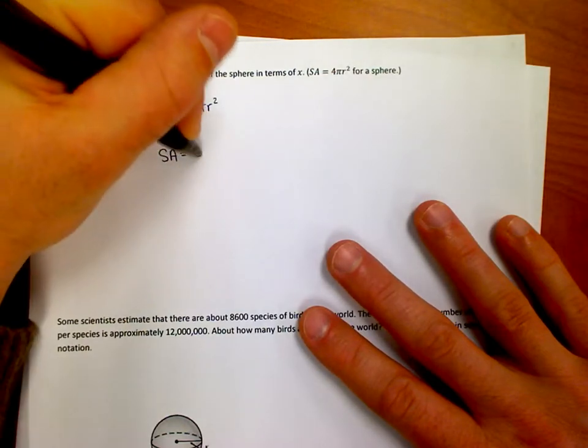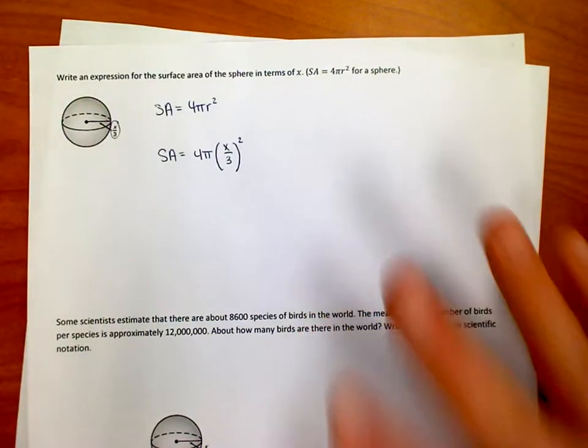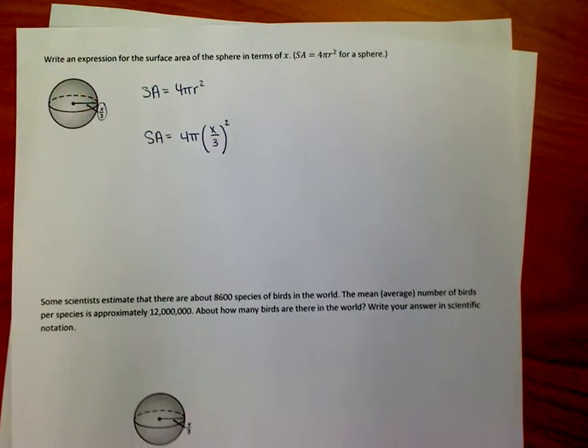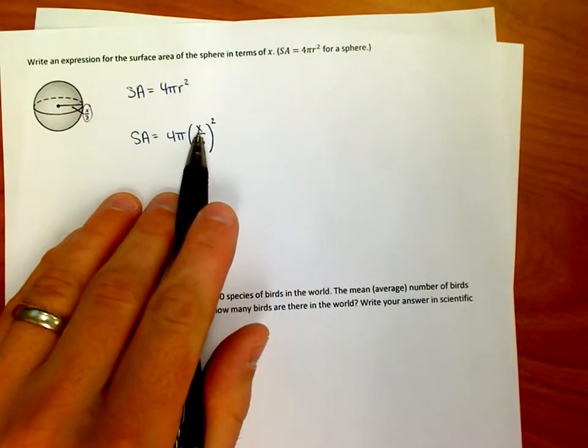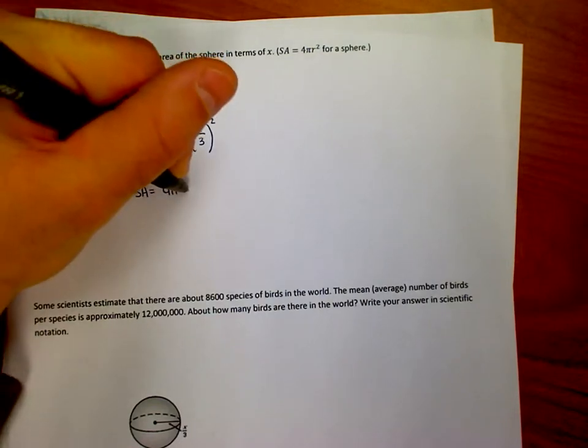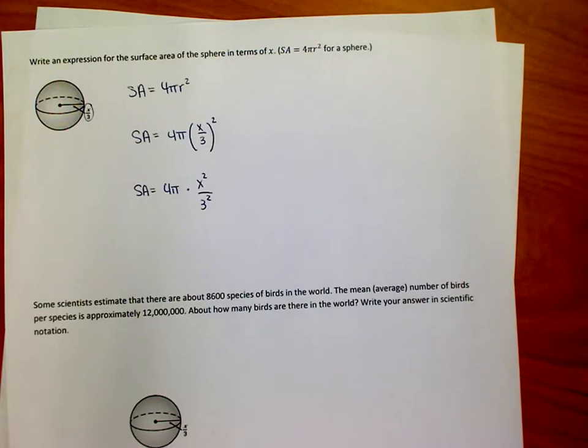So can we use the properties of exponents to rewrite this as x over 3 squared instead? And if we know our properties of exponents, what we know is that we can take this square and we can distribute it out to both the x and the 3. So in other words, it becomes 4 pi, and now it's times x squared over 3 squared, right? We can rewrite it that way.